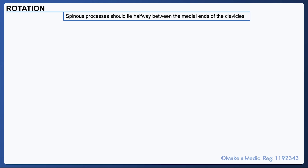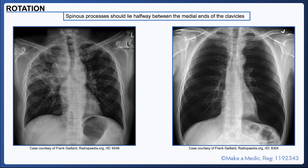Assessing the quality of a chest x-ray involves commenting on the rotation, inspiration, penetration, and exposure. First, let's talk about rotation. In a good quality chest x-ray, the thoracic vertebral spinous processes should lie halfway between the medial ends of the clavicle. On the left, you can see that the film is slightly rotated, whereas on the right, it lines up very well.